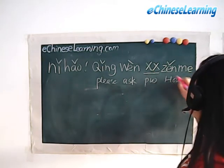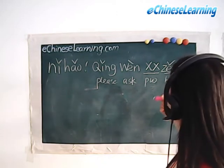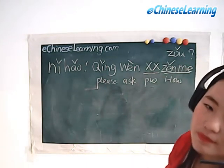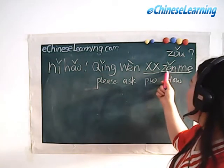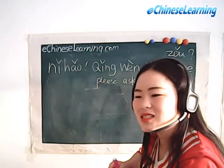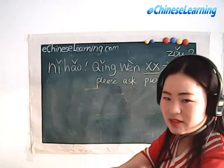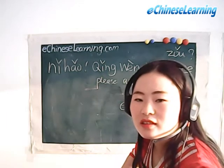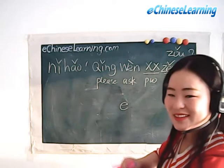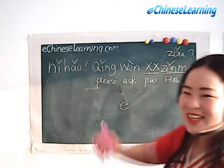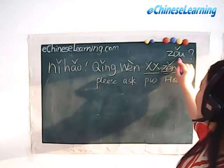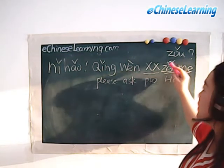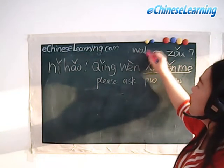The word 'zen me' means 'how.' In Chinese, sometimes we put the verb at the last position. The word 'zou' means 'walk' or 'go.' So the full structure ends with 'zen me zou,' meaning 'how do I go there' or 'how do I get there.' You have a real talent for learning this!